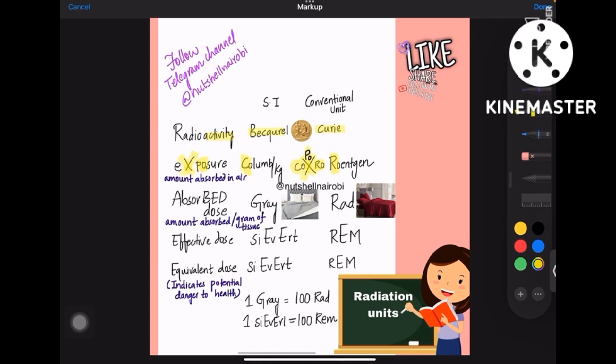Coming to absorbed dose, remember it like BED. So there are two beds here: Gray and Rad. Coming to the effective dose and equivalent dose, both have E in it, so Sievert and Rem.